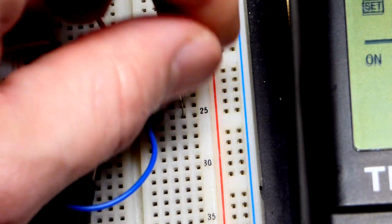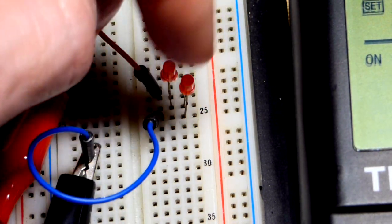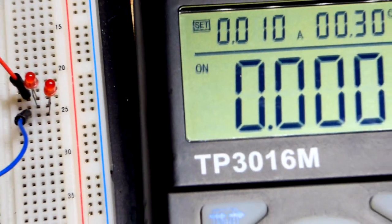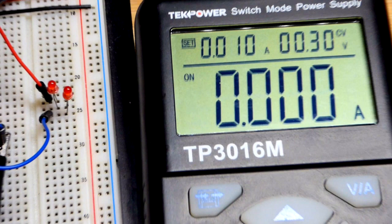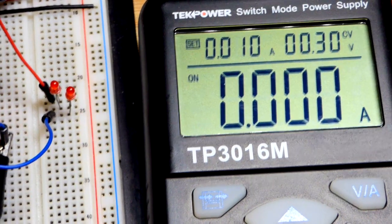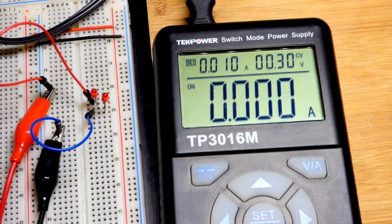And so this one is reverse biased, that one is forward biased. And we will zoom back here and we are going to start raising the voltage. I'll zoom back so you can see what buttons I'm pushing there.